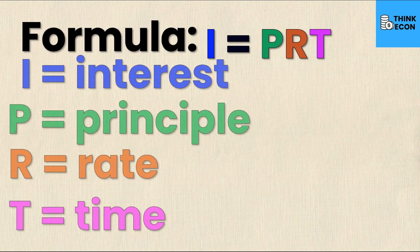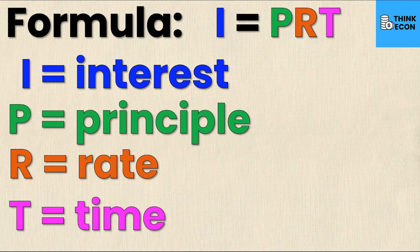We'll start with I. I stands for interest — that's just the interest that's going to be earned on any given amount of money that you have. This is the money earned on top of the original amount. If it's money you owe, the interest would be the additional money you owe on top of the original amount. If it's money you're earning, the interest is the amount you earn above the initial amount that you invested.